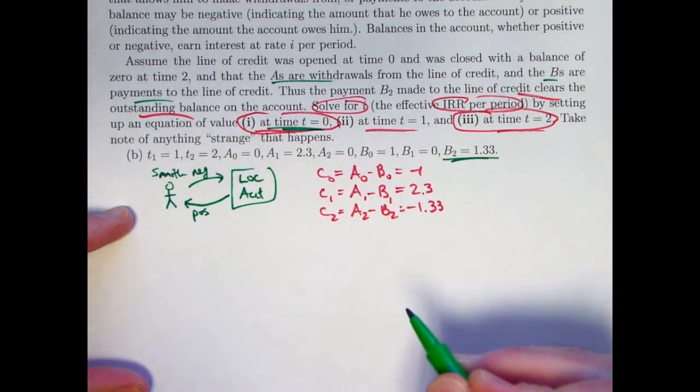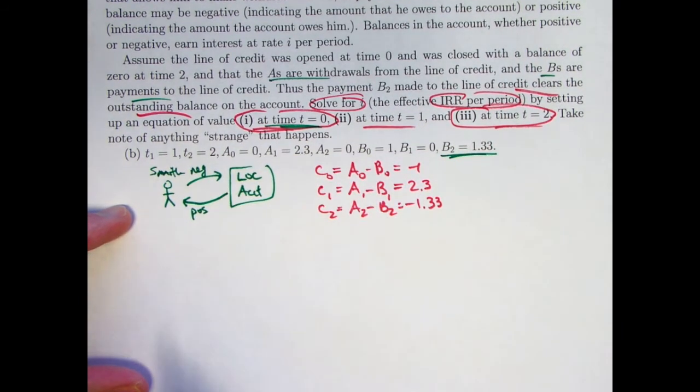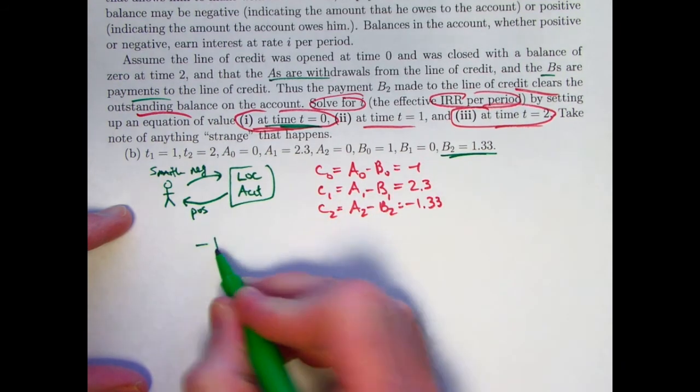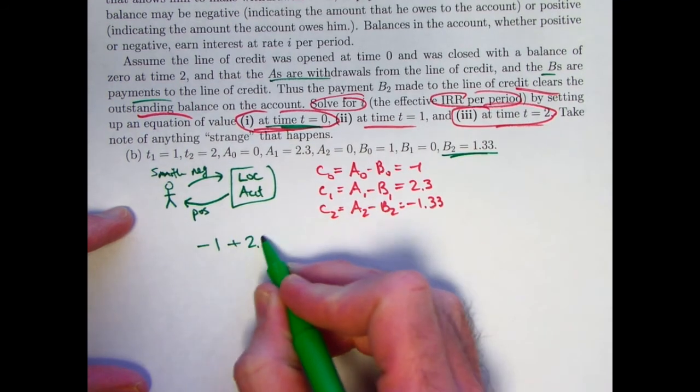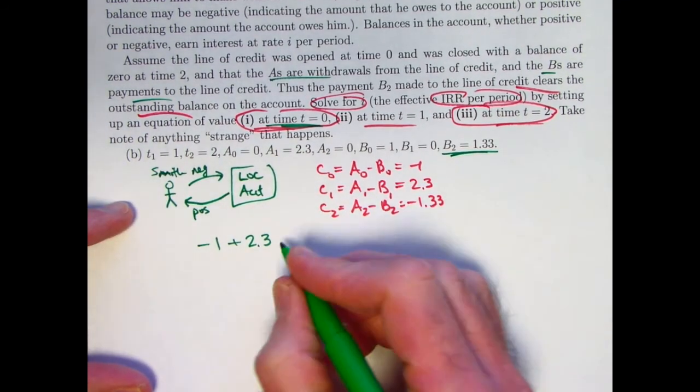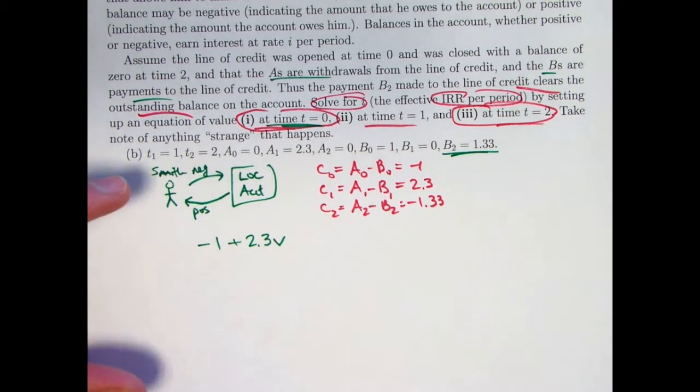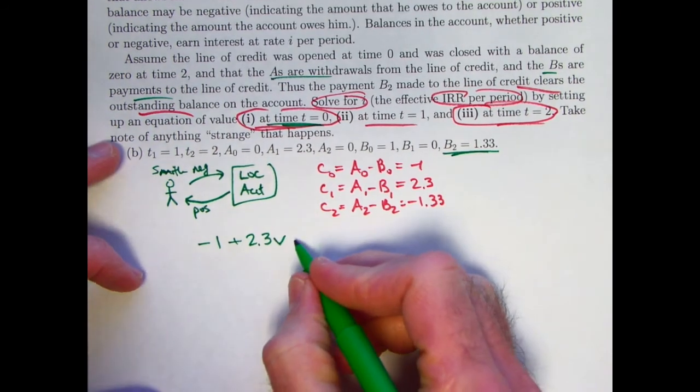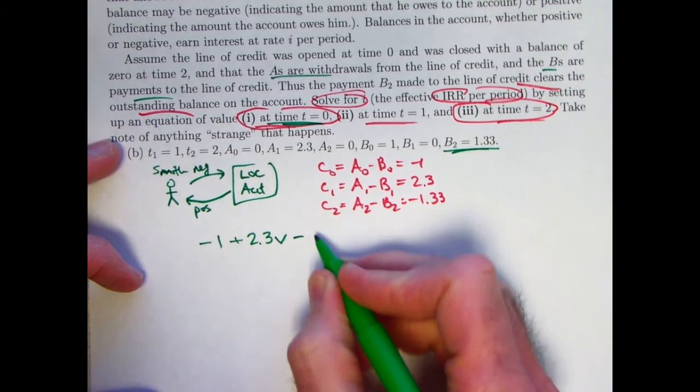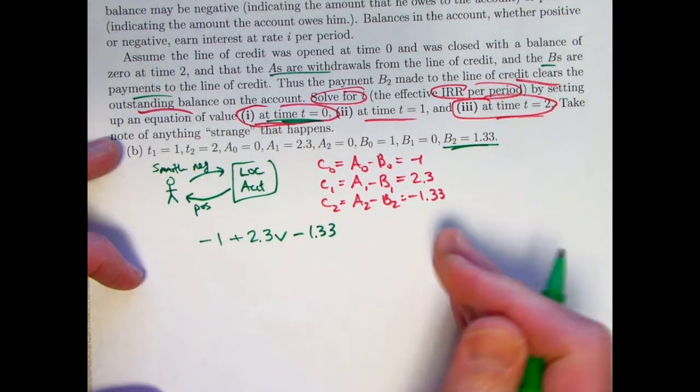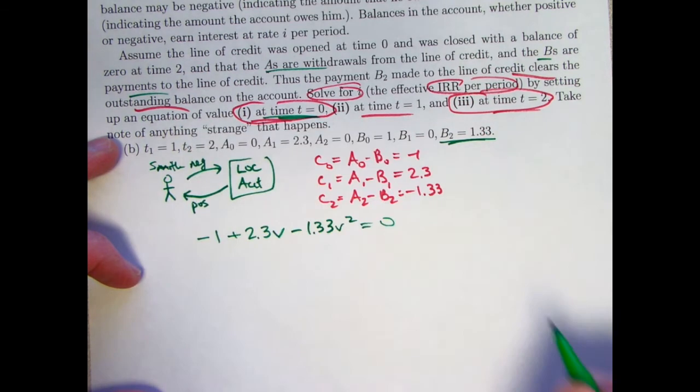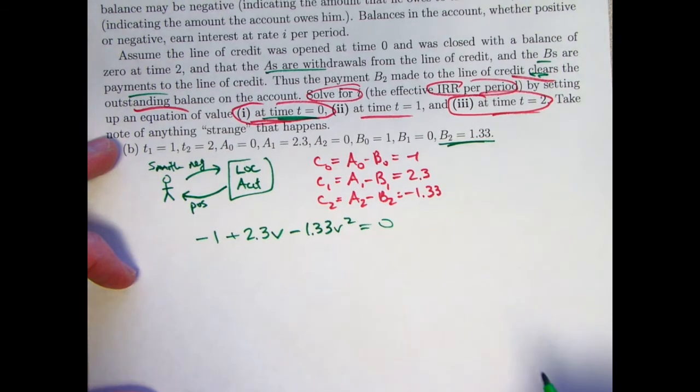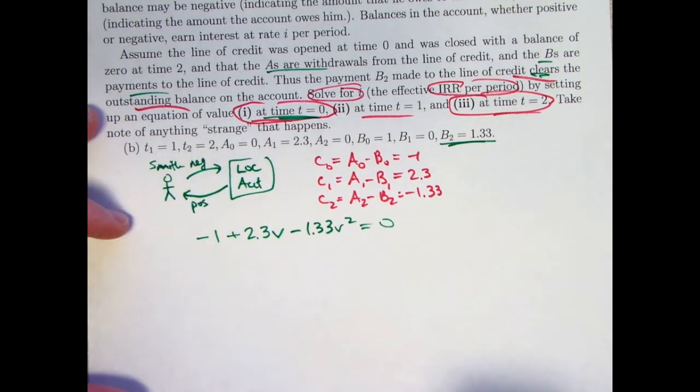If I evaluate it at time 0, that means I'm discounting back to time 0. The negative 1 is already at time 0, so it does not get discounted. The 2.3 is one period ahead of time. It's positive. I put plus 2.3 times the present value discount factor, V. It's going back to time 0 by one period. I told you I'm going fast here, so if this is too fast for you, watch the preceding one. Now, the final amount, negative 1.33, is at time 2. It's got to go back two periods of time. It gets multiplied by V squared. And this needs to come to 0 so that the outstanding balance, as I said, is cleared to 0. Okay, and that would be the equation you'd solve.